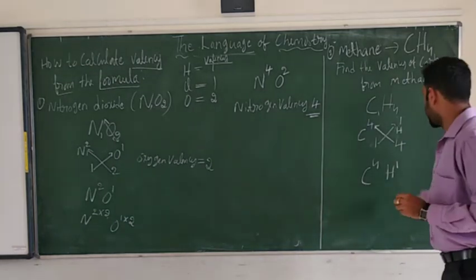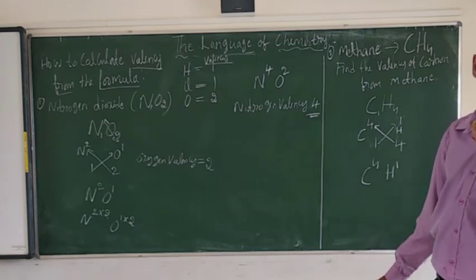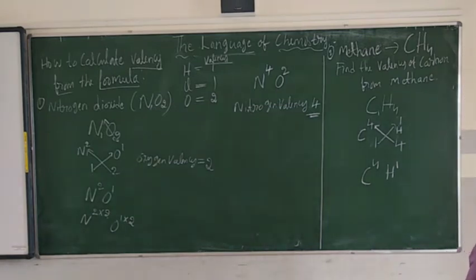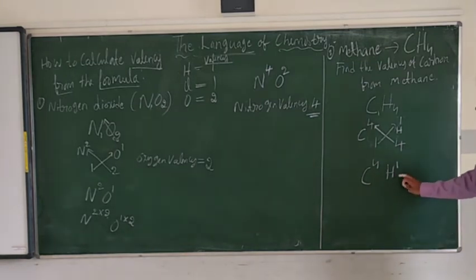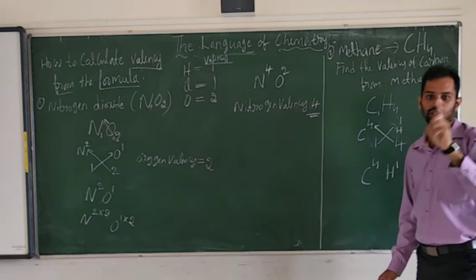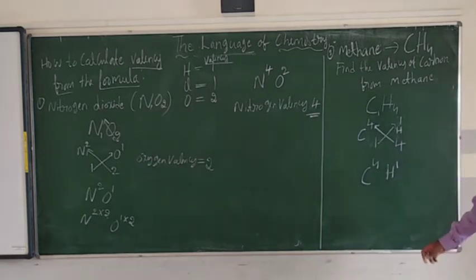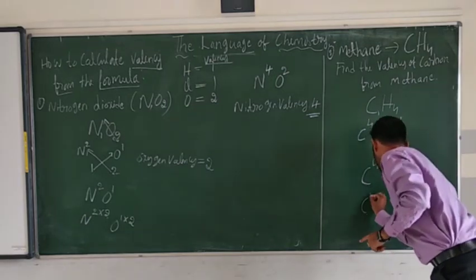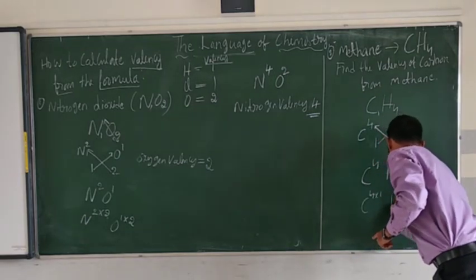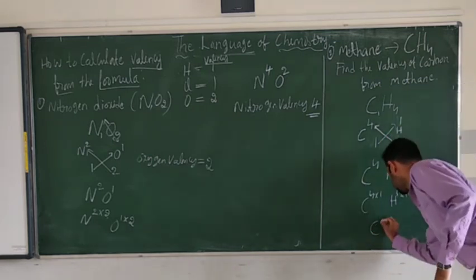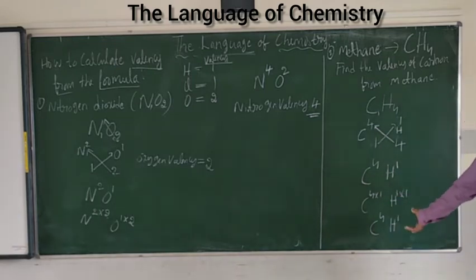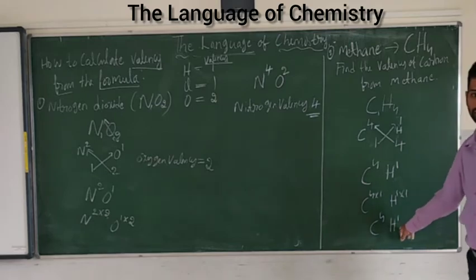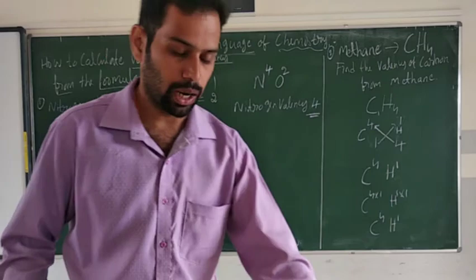Hydrogen valency is 1 — it is a group 1 element, its valency is always 1. So multiply superscripts: 4×1=4 for carbon, 1×1=1 for hydrogen. Therefore carbon valency is 4 and hydrogen valency is 1.